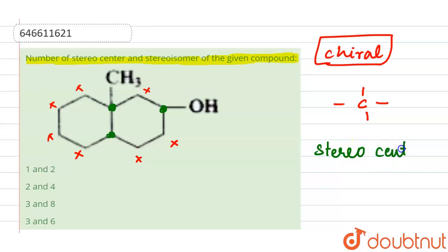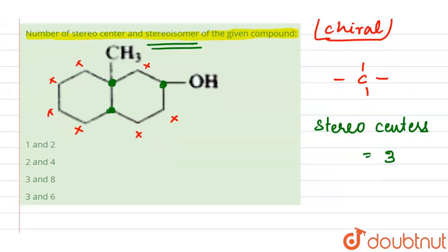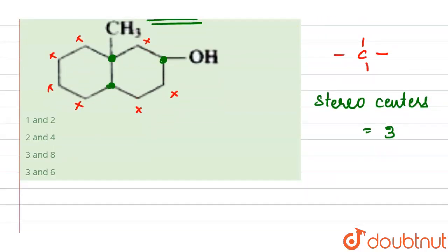Now we need to calculate the stereoisomer. For complex structures, we have one formula: two to the power n, where n is the number of stereocenters.